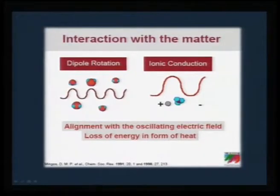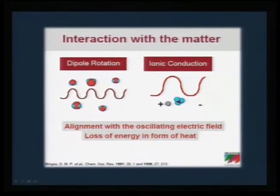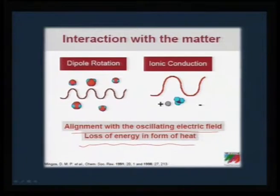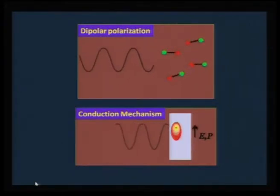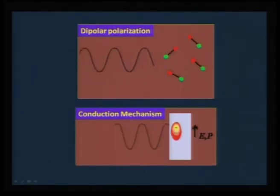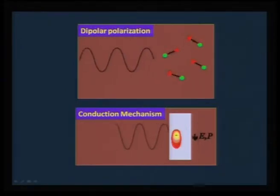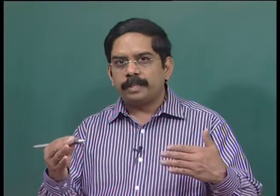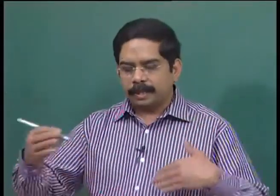Dipole rotation relates to the dipole oscillating in a molecule when kept in an electric field. It could also be ions coupling with the electromagnetic radiation and oscillating according to the frequency. Alignment with the oscillating electric field results in loss of energy in the form of heat. As shown in the animation, when microwaves come, the dipoles oscillate — they do not rotate, but oscillate with the phase. When molecules are in phase with the frequency of the microwave, they start oscillating in keeping with the electromagnetic radiation.